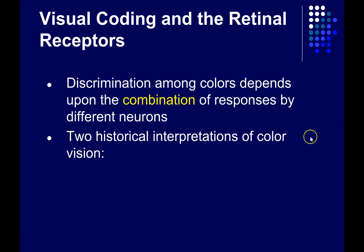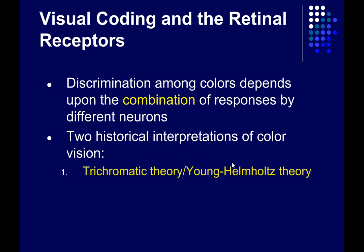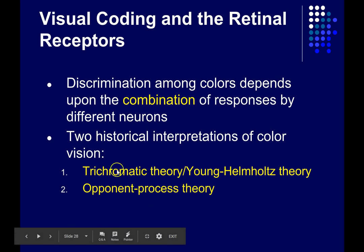This leads into the two historical interpretations of color vision. For many decades, these were competing explanations because each of them explained different properties of color vision. One is the trichromatic theory, also known as the Young-Helmholtz theory after its originators, and the other is the opponent process theory. As we'll see, each of these theories explains aspects of color vision, but they fail to explain all the phenomena associated with color vision.